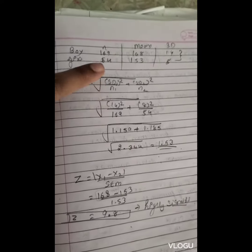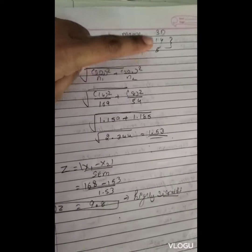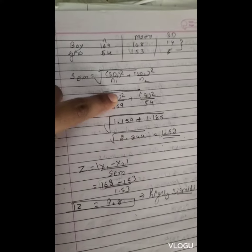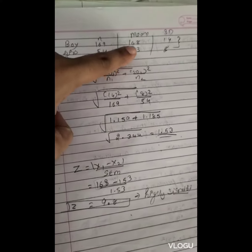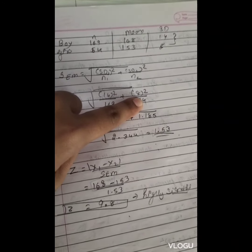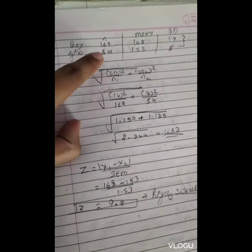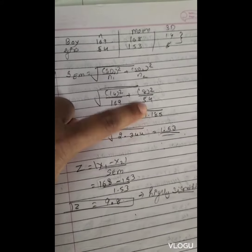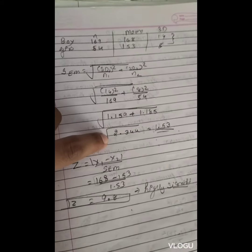SD1 is 14, n1 for boys is 169 observations. For girls, standard deviation is 8 and number of observations is 54. After solving this my answer will be 20.344 and under root gives my answer which is 1.53.